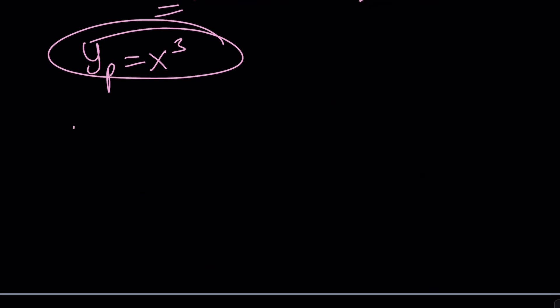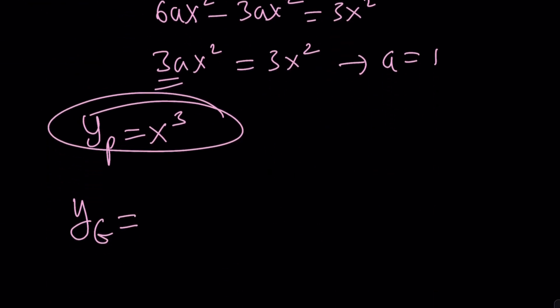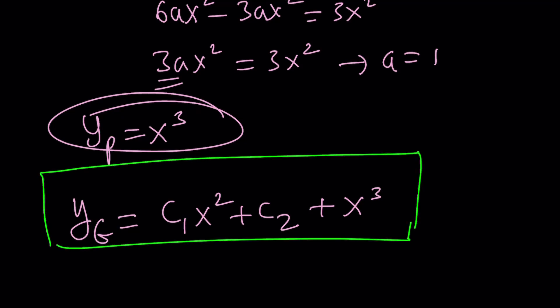So, the general solution is then going to be what? Let's go ahead and take a look at the homogeneous case. c sub 1x squared plus c sub 2, another constant, plus x cubed. Notice that part of this is not with a constant because it's a particular solution. But guess what? This is going to be the solution for the non-homogeneous case.